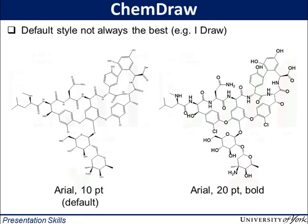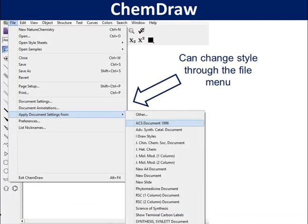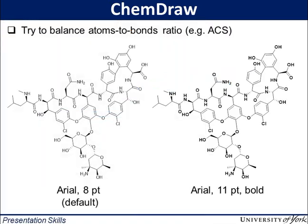The inclusion of chemical structures also poses a text-size challenge, as the structure on the left shows. Chemists instinctively know that molecules are connected by a carbon-carbon scaffold, and so more emphasis should be placed on the non-carbon atoms by increasing their size. Changing the document settings through the file menu in ChemDraw can help with this, for example by shortening carbon-carbon bonds, making more room for larger atom labels.